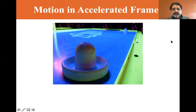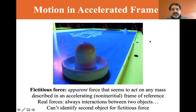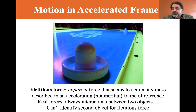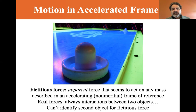A fictitious force is an apparent force that seems to act on any mass described in an accelerating, that is, non-inertial frame of reference. A real force always involves interactions between two objects, where you can't identify the second object for a fictitious force. We'll see that in what people call the centrifugal force — not a real force, but it's a real experience — specifically just the inertia of an object showing an apparent force.